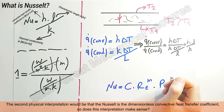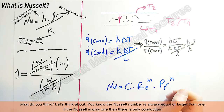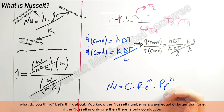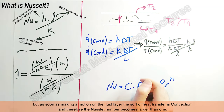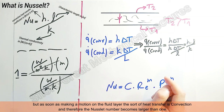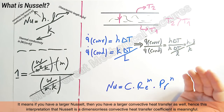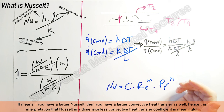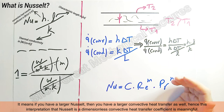The second physical interpretation is that Nusselt is the dimensionless convective heat transfer coefficient. The Nusselt number is always equal to or larger than one. If Nusselt equals one, there is only conduction. But as soon as motion occurs in the fluid layer, convection comes along and Nusselt becomes larger than one — meaning a larger Nusselt corresponds to larger convective heat transfer.